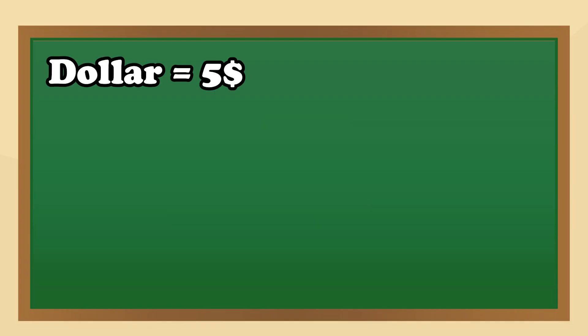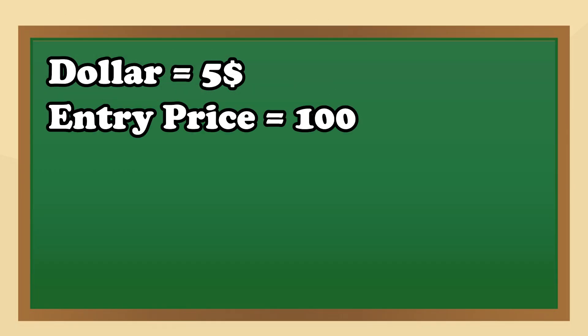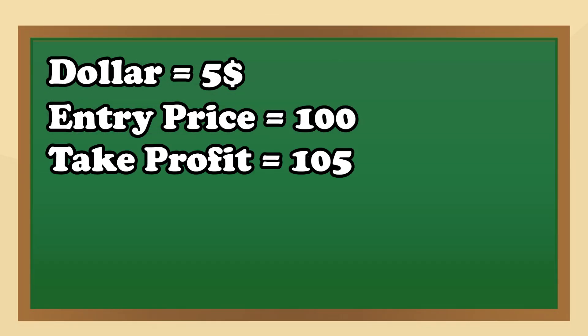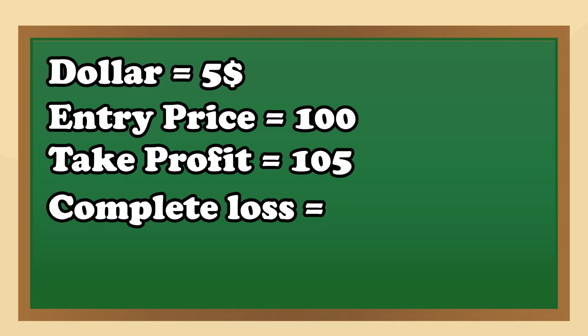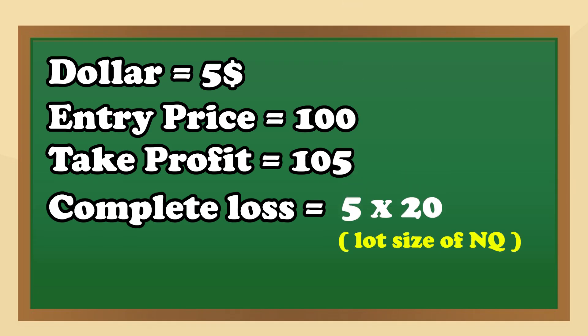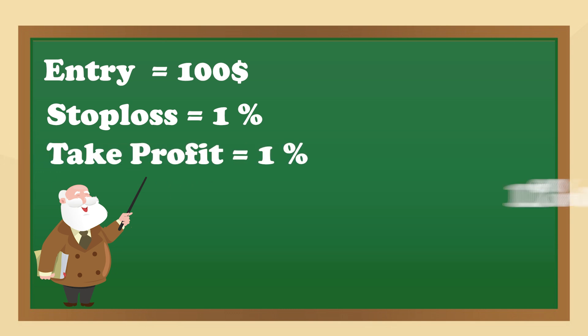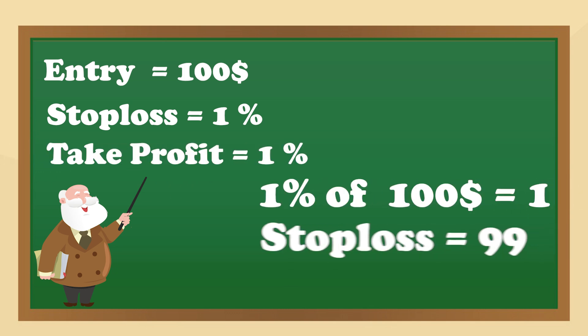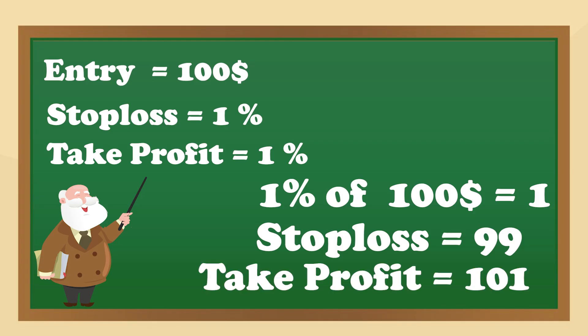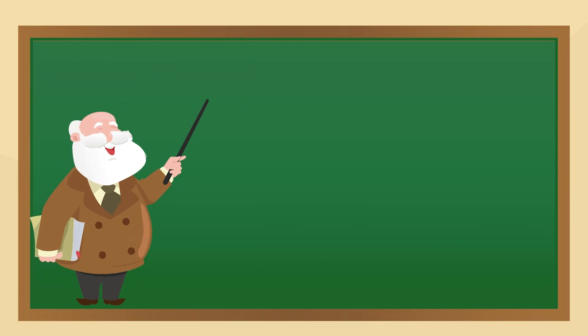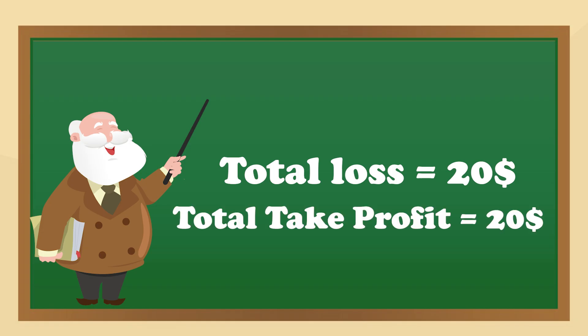There are five stop loss types. The first is Dollar: this amount is added or subtracted from the entry fill price. For example, if you set five dollars and your entry price is 100, your take profit is 105 and your total loss is 5 × 20 (where 20 is the NQ lot size). The second is Percentage: for example, entry at 100 with 1% stop loss and 1% take profit gives stop loss at 99 and take profit at 101, with total loss and profit both being 20 given a lot size of 20.